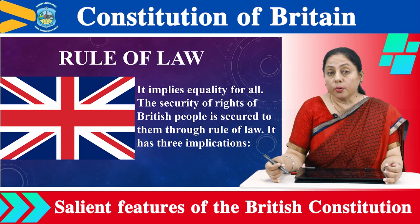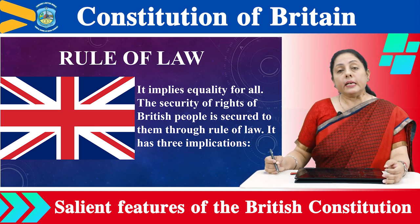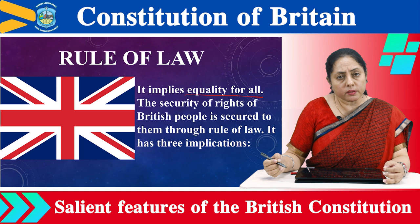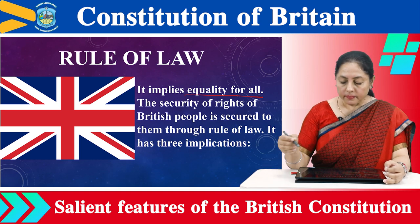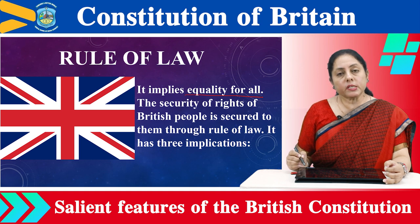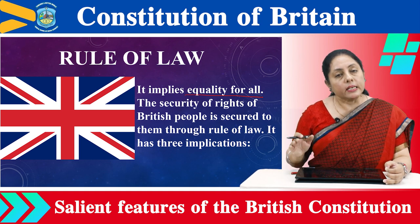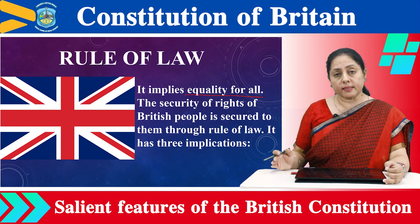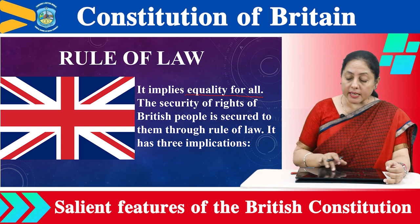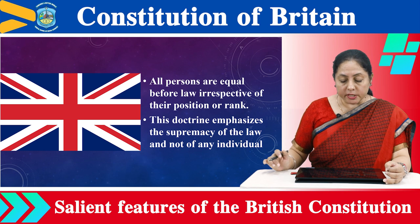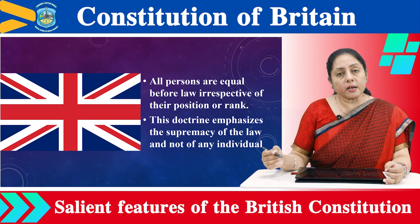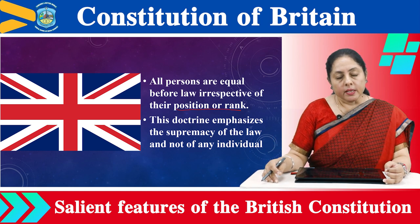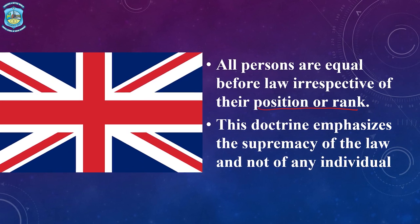The next feature is rule of law, which implies equality of law. As in Article 14 of the Indian Constitution — equality before law — the rights of British citizens are secured through rule of law. Rule of law has three implications. First, all persons are equal before law, irrespective of their position and rank, so there is no privileged class, no distinction of rich and poor.